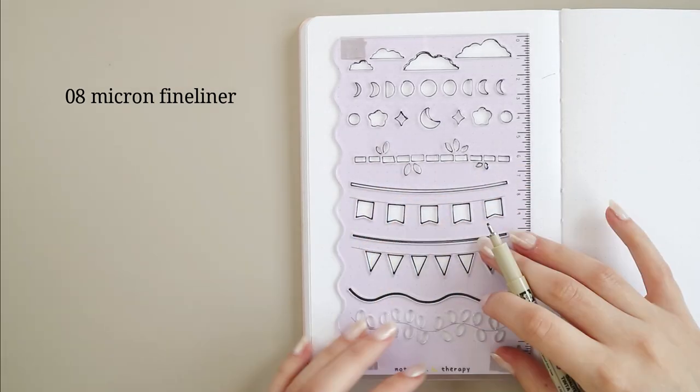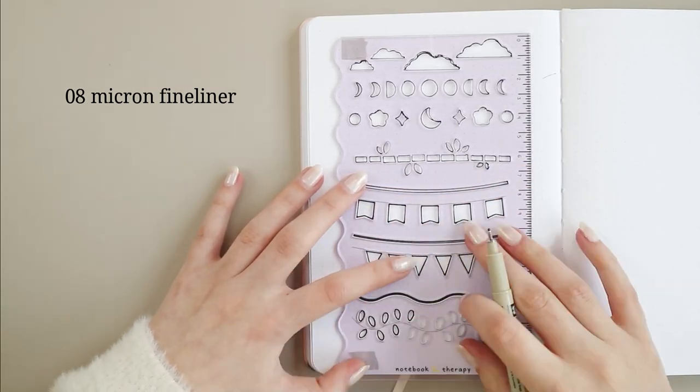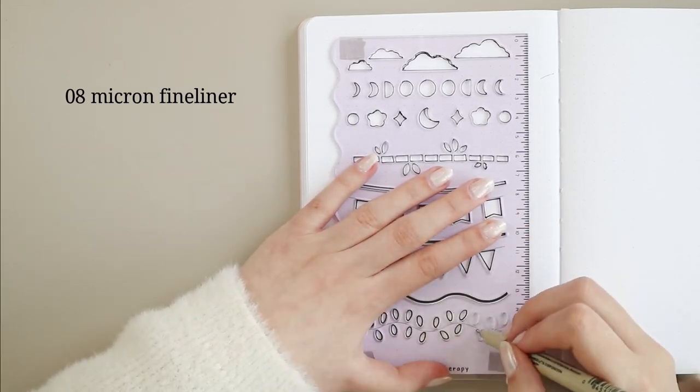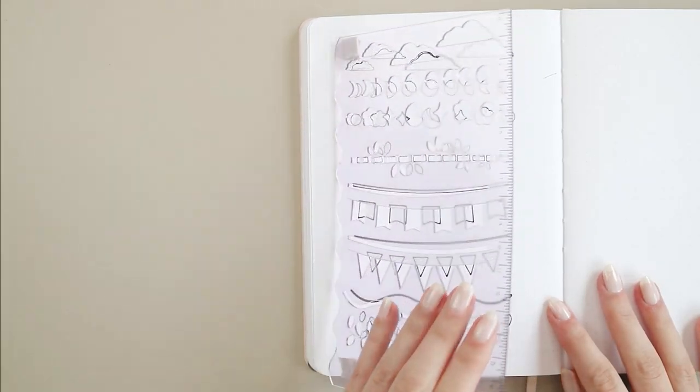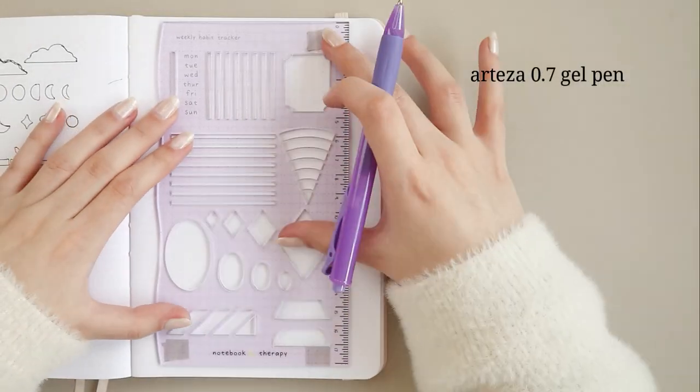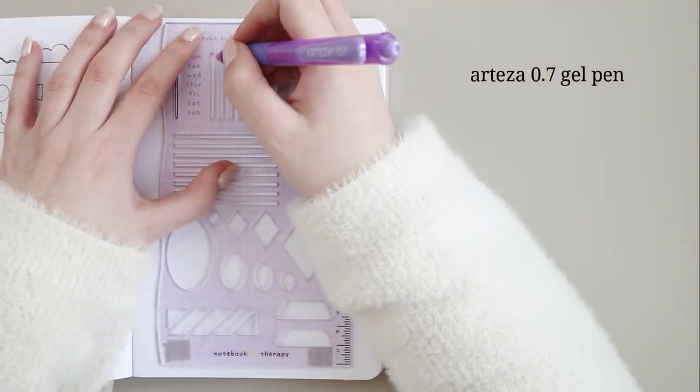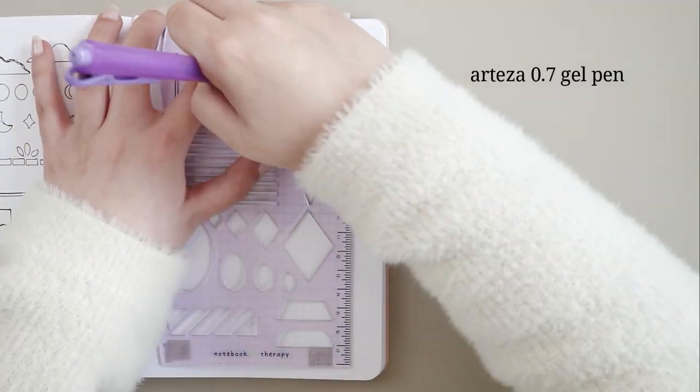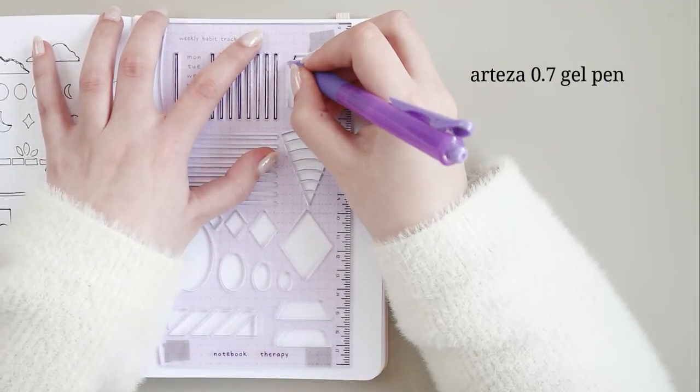Overall, fineliners and ballpoint pens are the mediums that work the best because you have more control of the pen on the stencils but I found that on the more complex shapes it was hard to trace the design onto the paper because it was tricky to move the pen around the design.